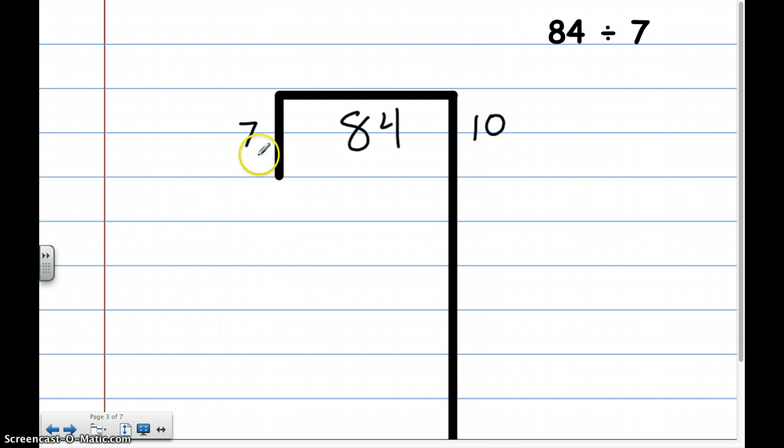I'm going to put 10 over here. 7 times 10, I'm going to multiply over here on this side, is going to give me 70. And then I'm going to subtract. And that gives me 14.